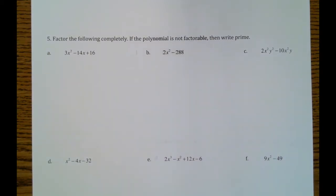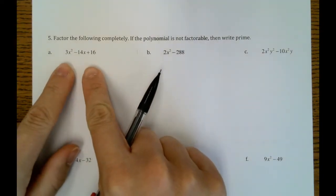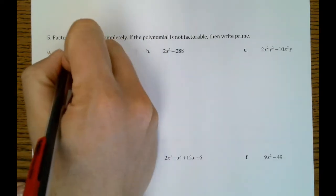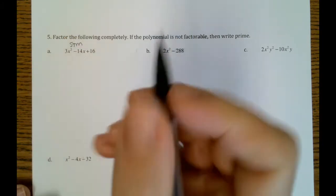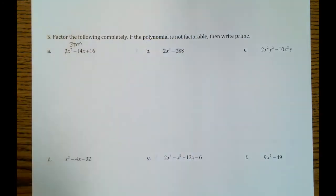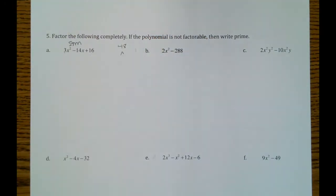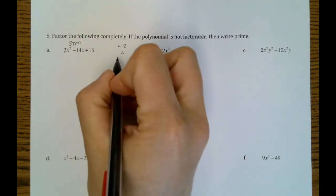Okay, number five, it says factor the following completely. So here you're going to have to decide what is best to do. So if we look at letter A, it's a trinomial, so that should mean split the middle. So I'm going to go ahead and do that. So 3 times 16. And we're going to find all of our factors of 48. So obviously 3 and 16 would work.